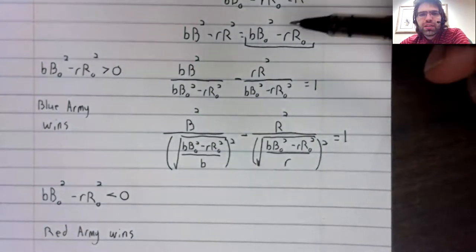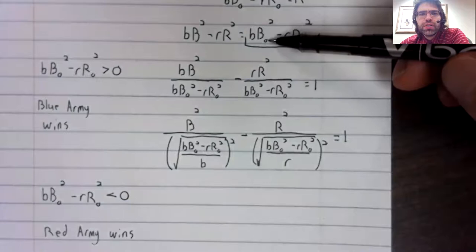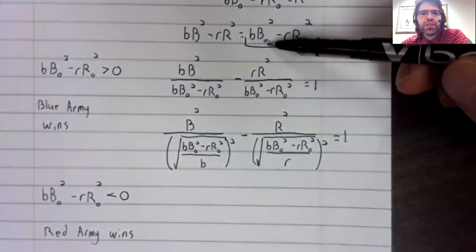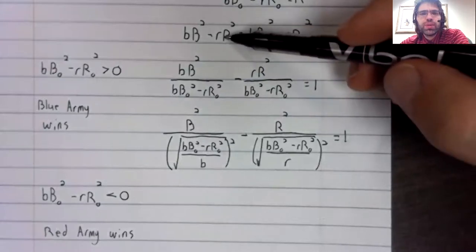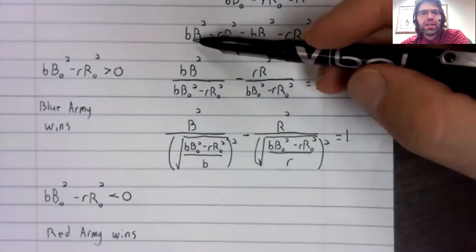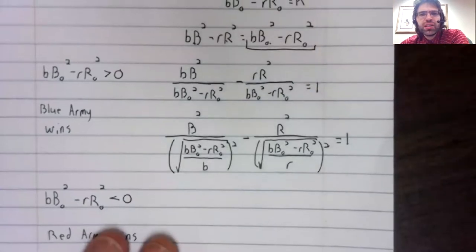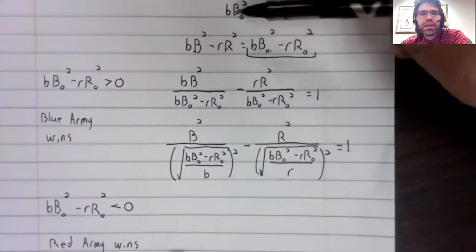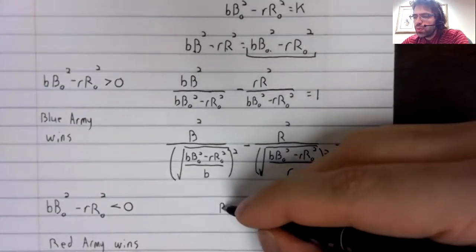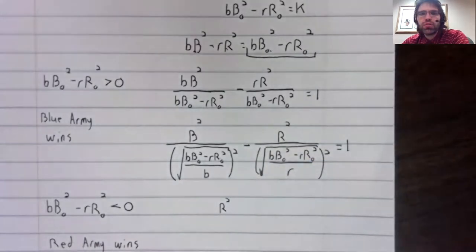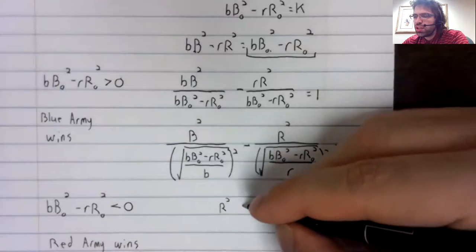And why is that? If this is negative, then when we divide both sides by it, this will become positive and this will become negative. That is to say, dividing both sides of this equality by a negative number will flip your terms.